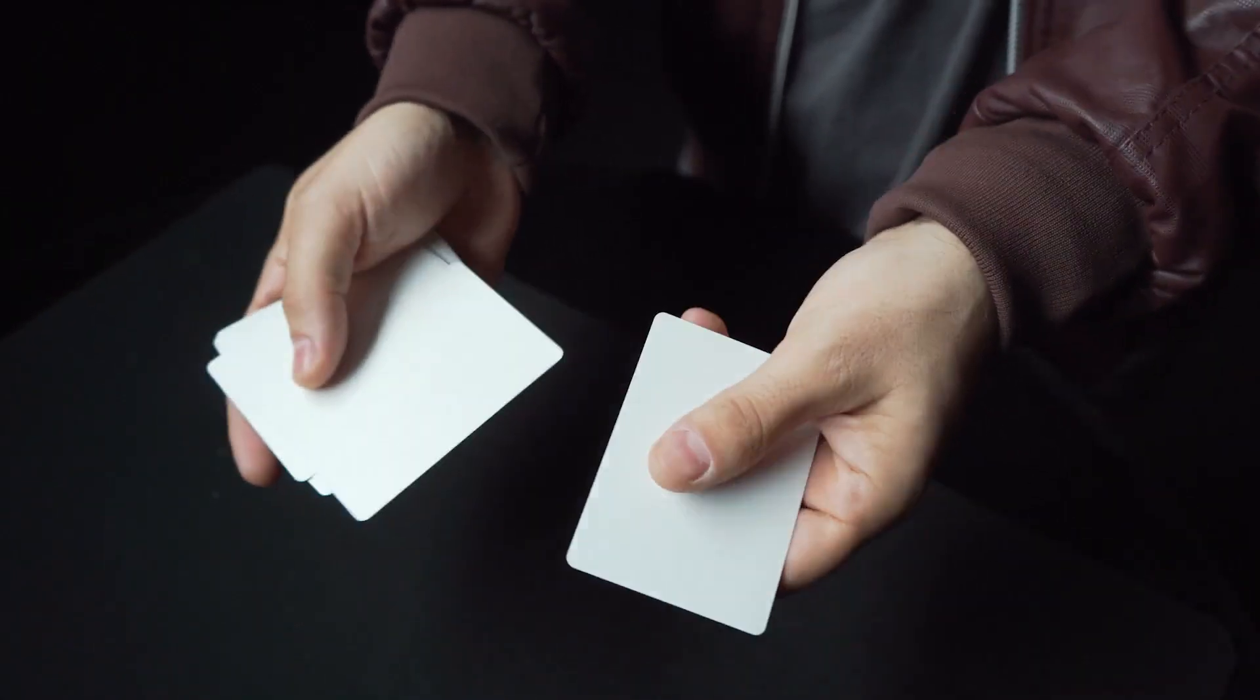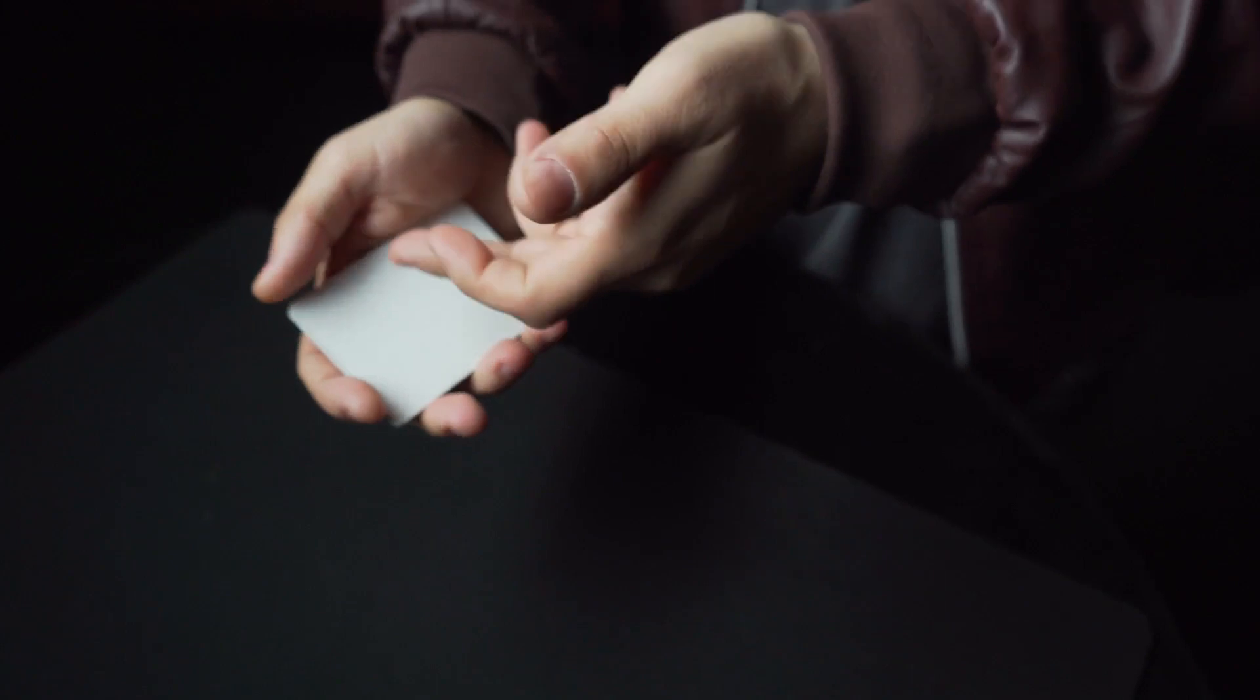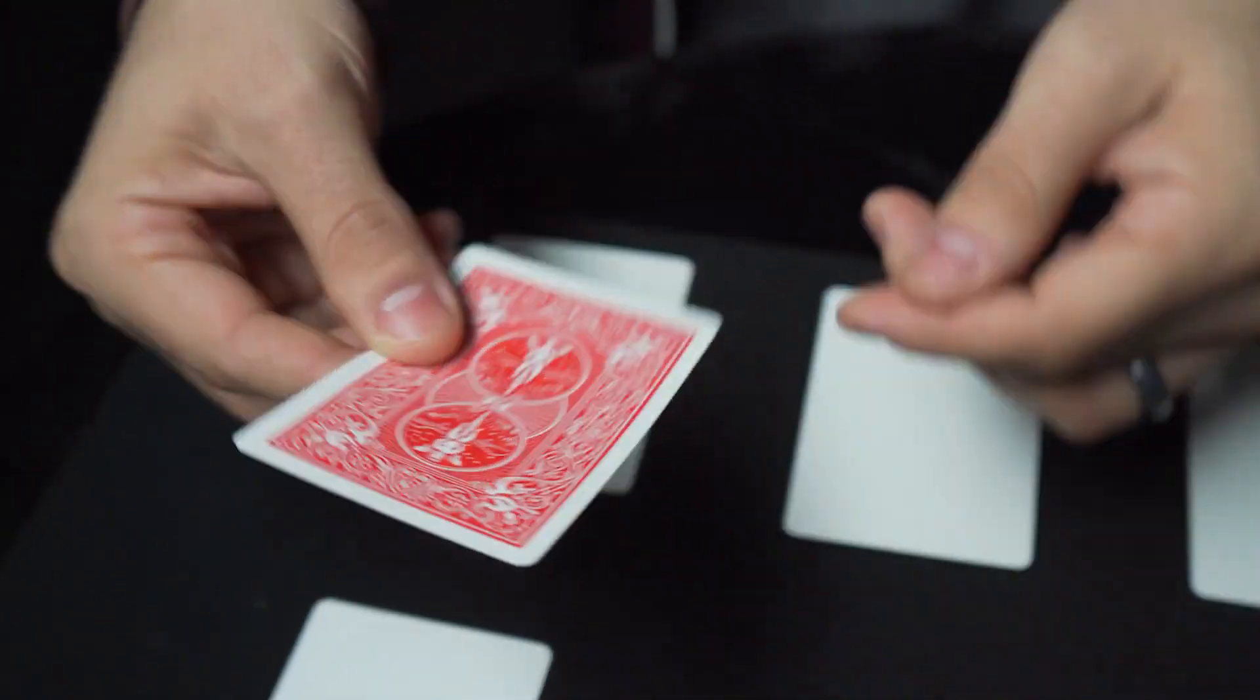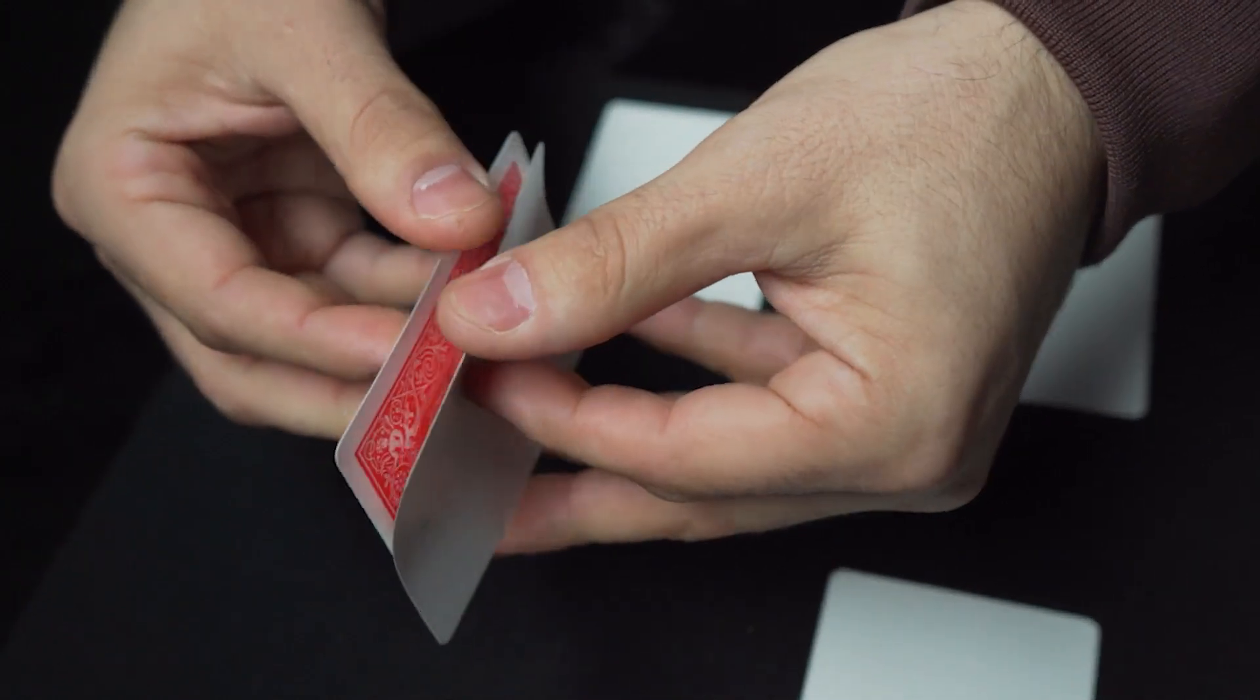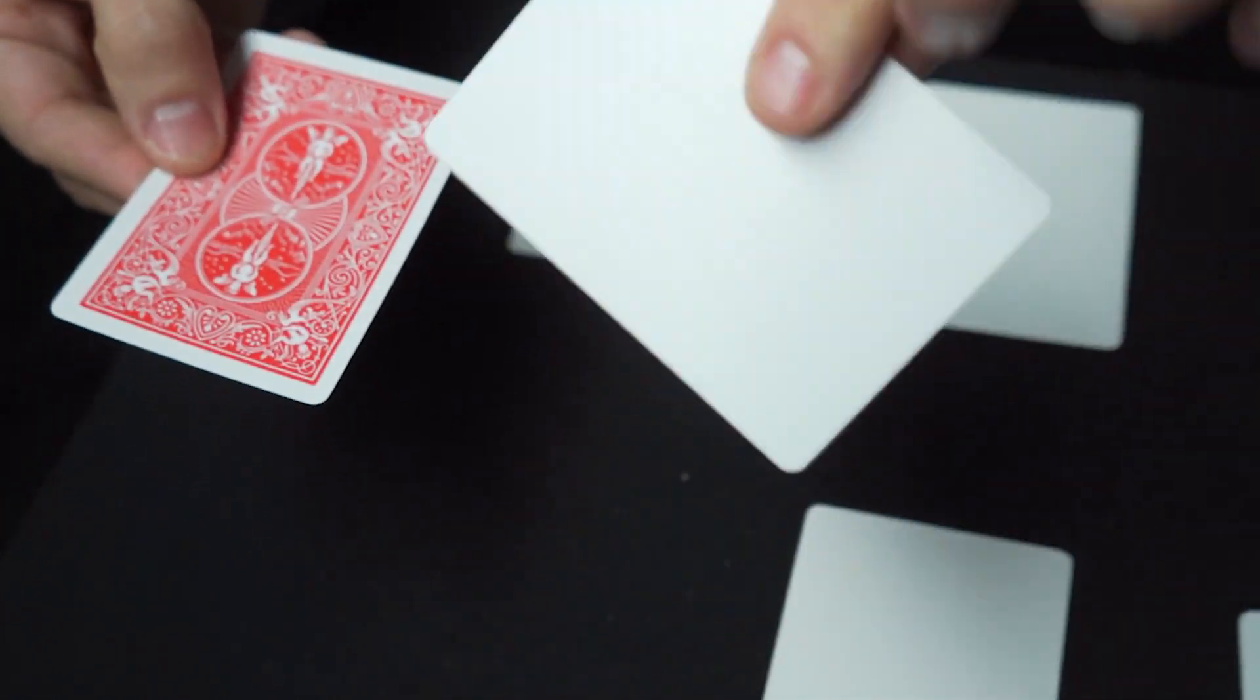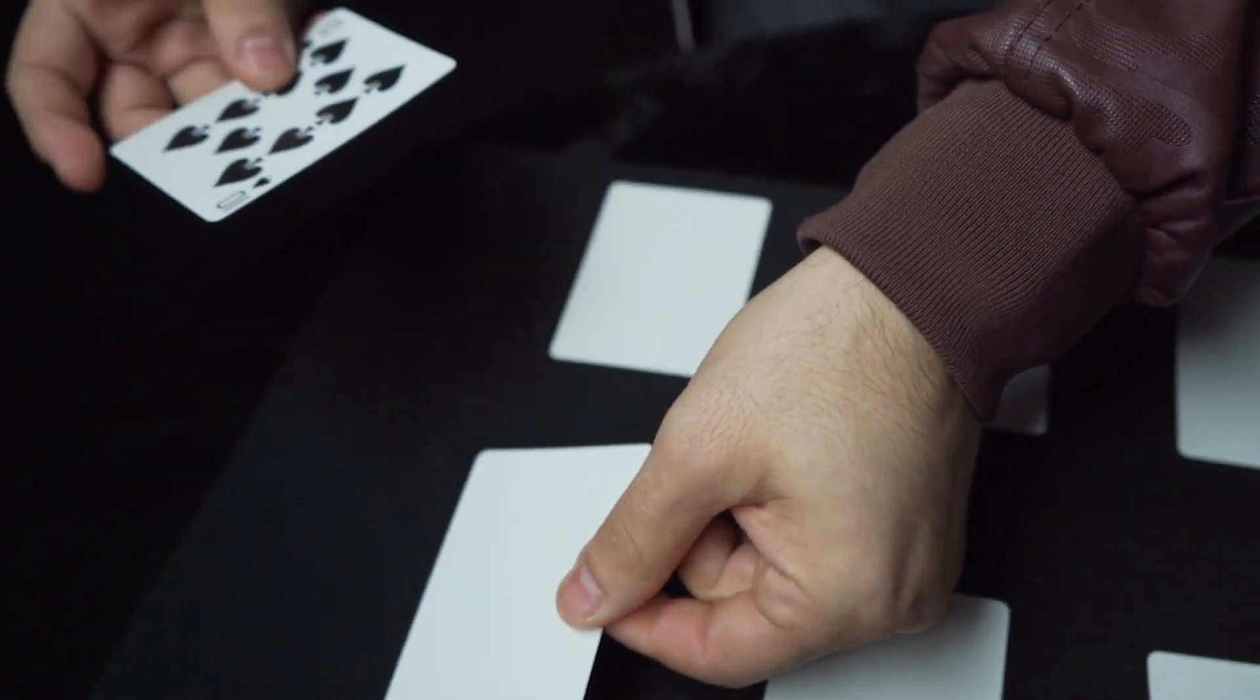Imagine this: you start off with blank cards with a special secret. Check it out—we'll take your card, press it right against the blank, a little squeeze, and it absolutely absorbs the ink onto that blank card.